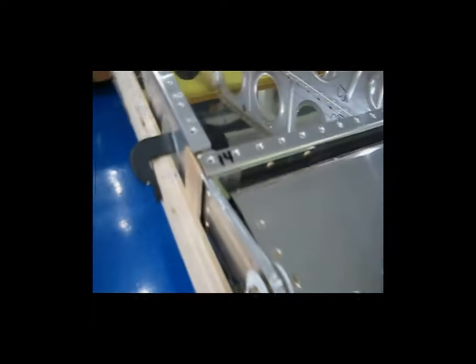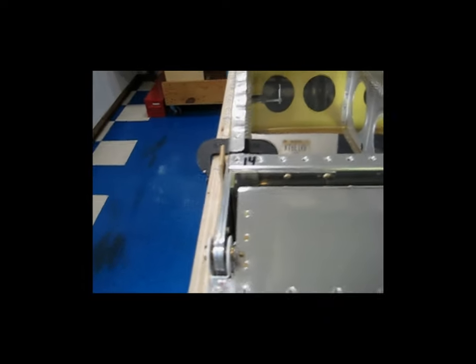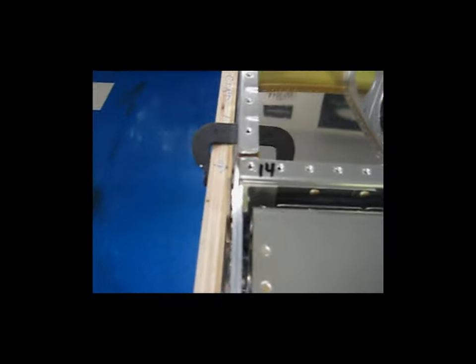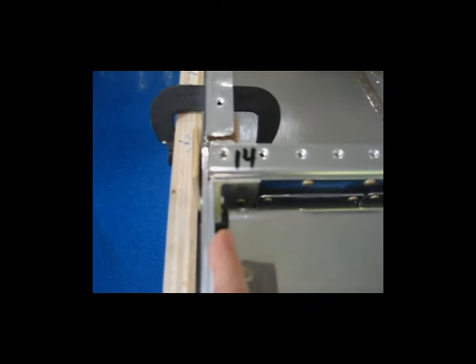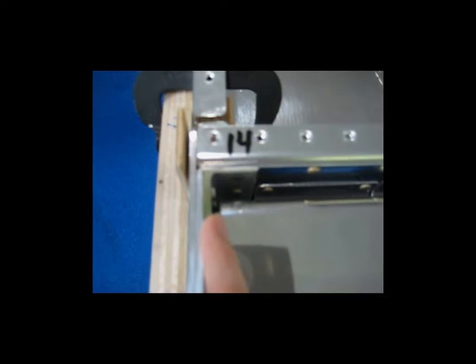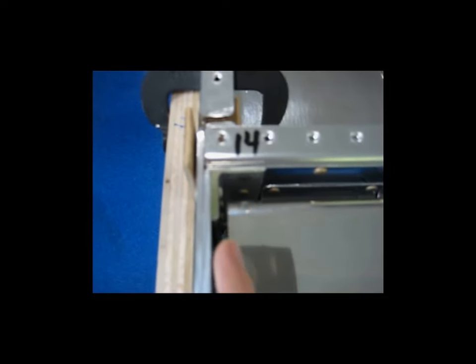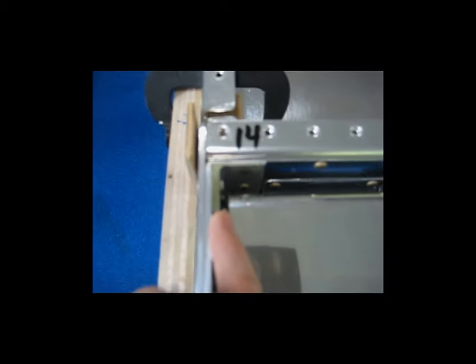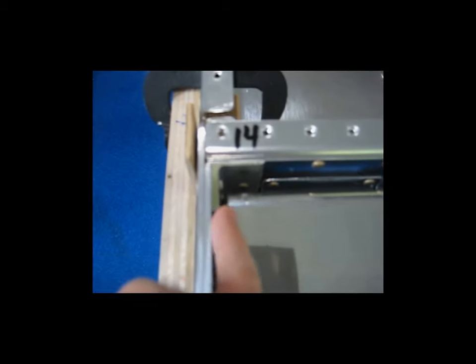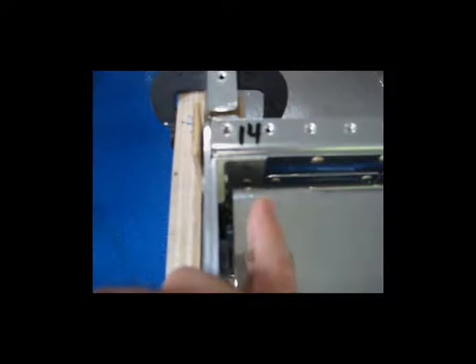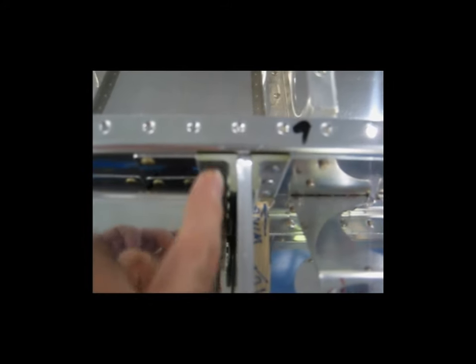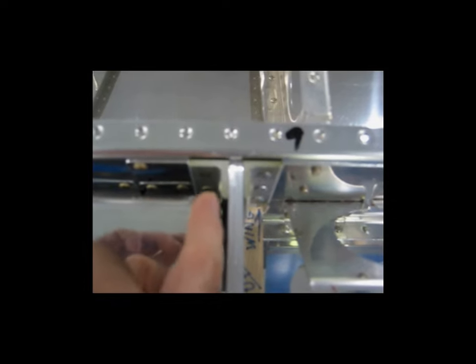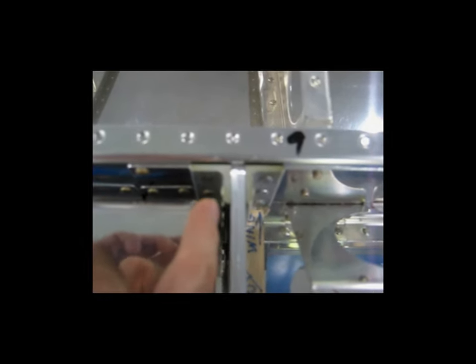So now that I've got my alignment reference in place, I put the aileron on. And the first thing that I like to do after I get it installed, I look at this gap right here. The gap between the aileron and the heavy 90-degree angle bracket. I try to get those even.